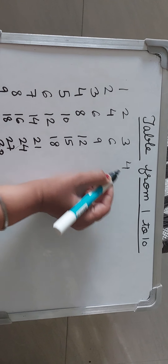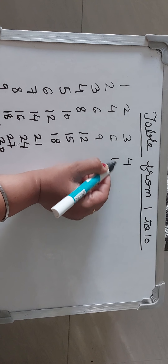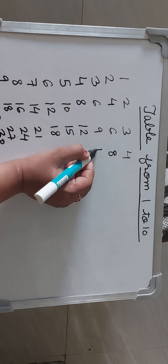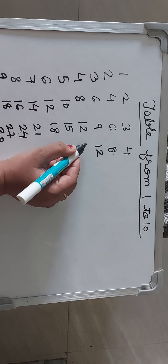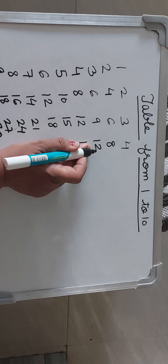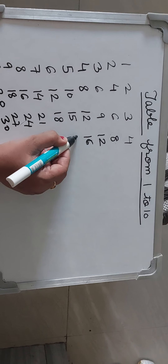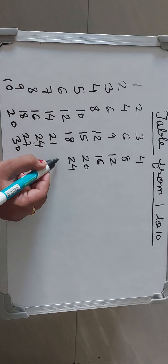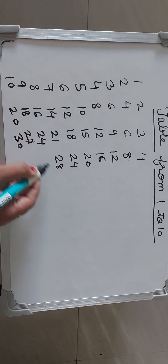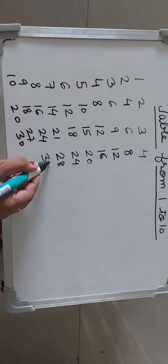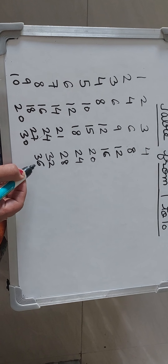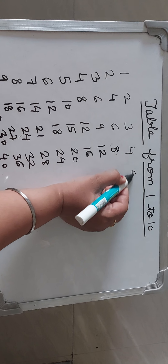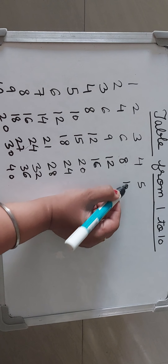Table of 4. 4 1s are 4, 4 2s are 8, 4 3s are 12, 4 4s are 16, 4 5s are 20, 4 6s are 24, 4 7s are 28, 4 8s are 32, 4 9s are 36, 4 10s are 40.